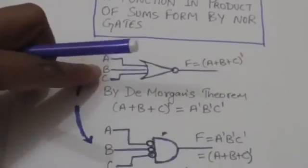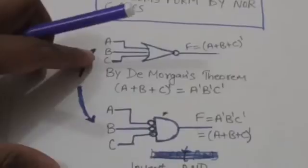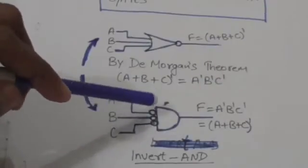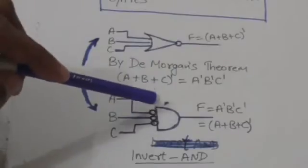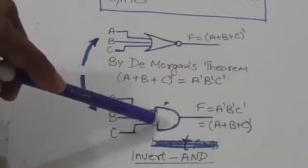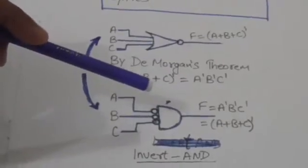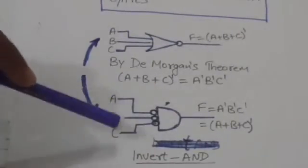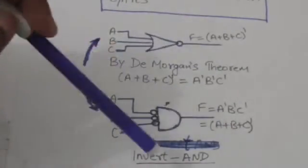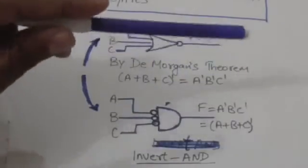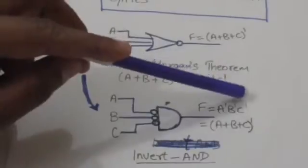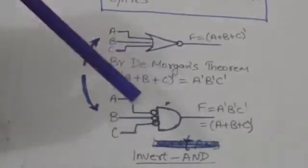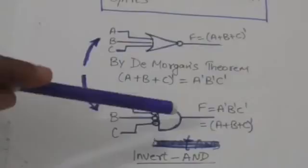Look at this gate — here I have put small circles which perform the complement operation right at the inputs of this AND gate. So the inputs of this AND gate would be A complement, B complement, and C complement. The output of this inverted AND gate would be A complement AND B complement AND C complement, which equals the complement of A plus B plus C. This means this inverted AND gate is equivalent to the NOR gate.